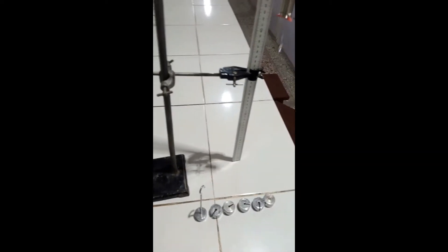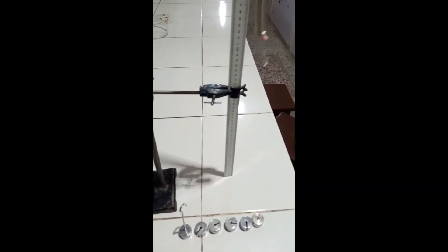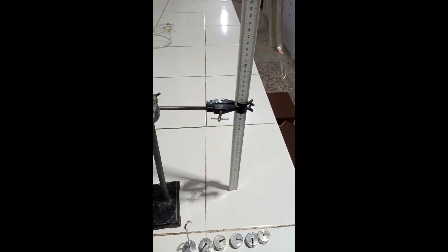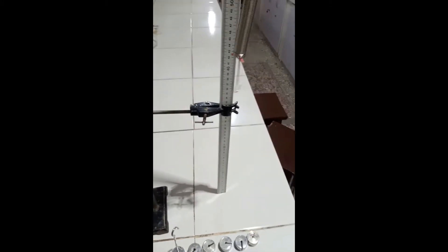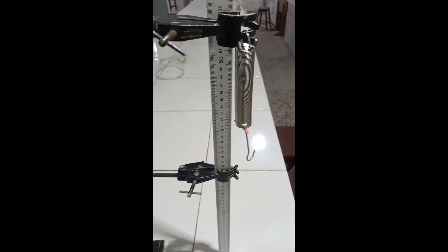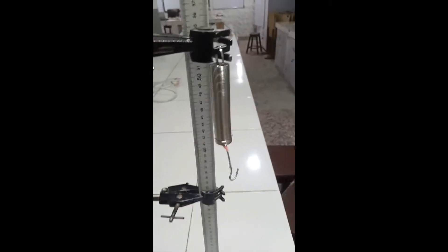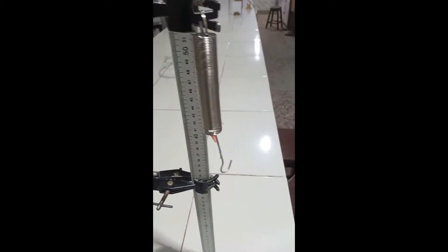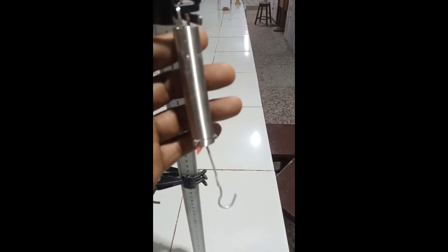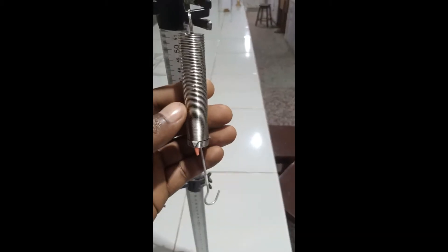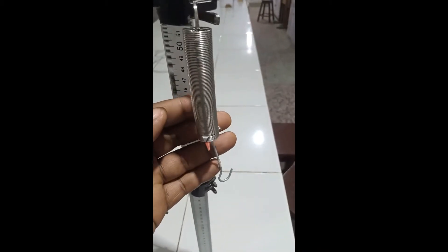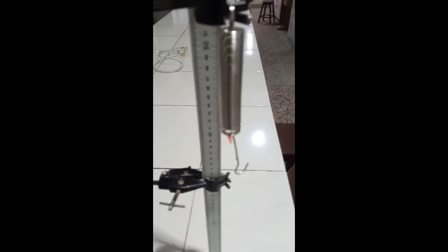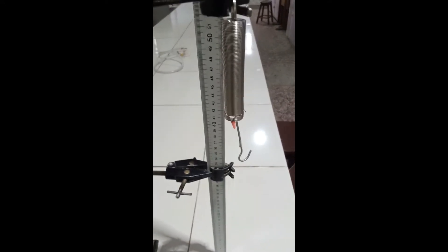So the first thing I'm going to be doing is to measure the original length or the original pointer reading of the spiral spring. Having measured the length, the initial pointer reading, the length of the spiral spring is eight centimeters, that is about 0.08 meters.